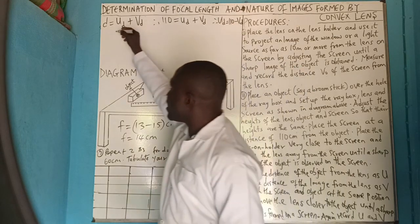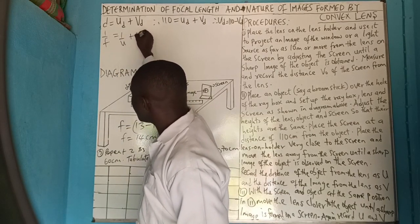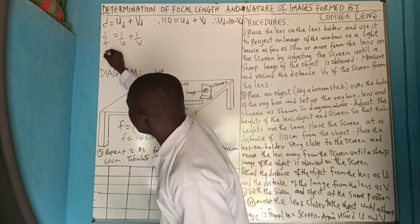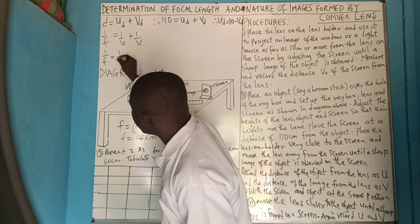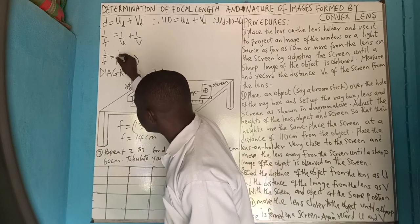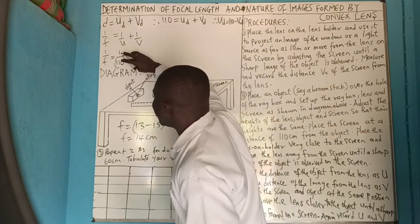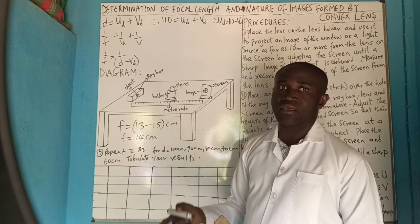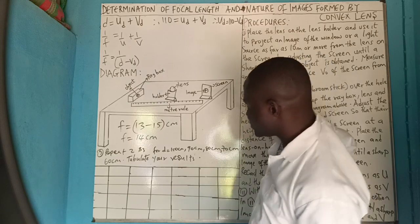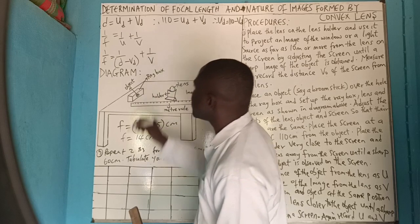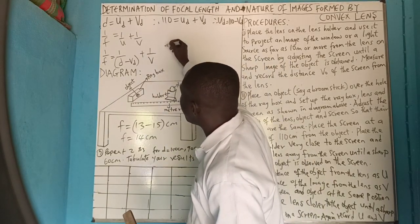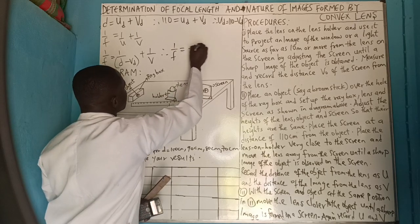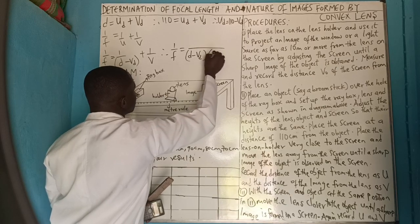Recall that our lens formula is 1 over F equals 1 over U plus 1 over V, where U is 110 minus V_D. We substitute: 1 over F equals 1 over (110 minus V_D) plus 1 over V. Finding the LCM, we get 1 over F equals the quantity [V_D plus (D minus V_D)] all over [V_D times (D minus V_D)].